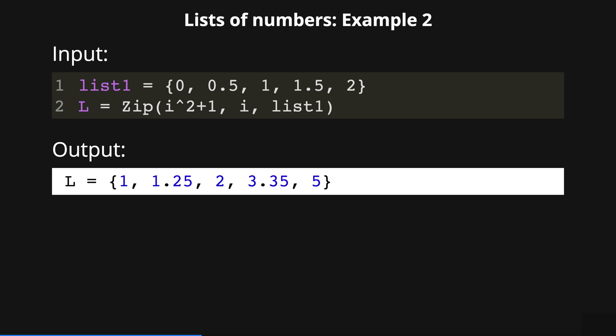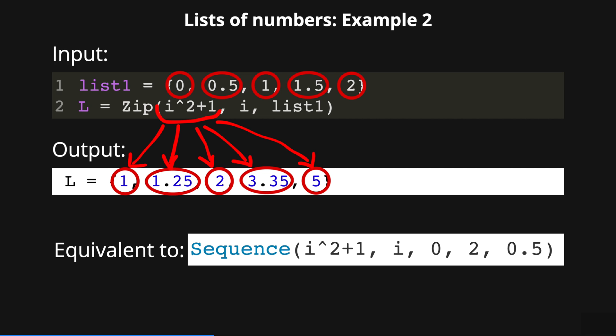Again, for each element in list1, the zip command evaluates it in the expression i squared plus 1. Equivalently, using the sequence command, we can type i squared plus 1 as the expression where i is the variable that runs from 0 to 2 with an increment of 0.5.